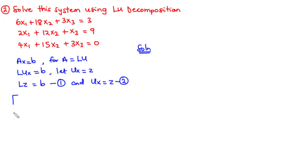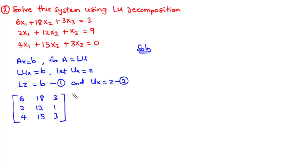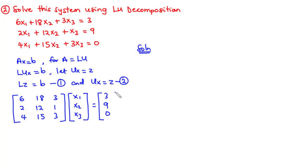So we have our coefficient matrix having elements 6, 18, 3, 2, 12, 1, 4, 15, and 3. This is multiplied by the column matrix having components X1, X2, X3 — the unknown variables — and that equals the right-hand side values 3, 9, and 0.